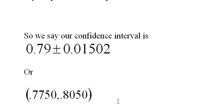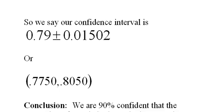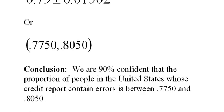Now, what's our conclusion? How do we relate all these numbers back to the problem? Well, here's what we say. We are 90% confident that the proportion of people in the United States whose credit report contains errors is between 0.7750 and 0.8050.